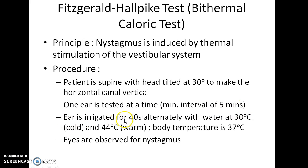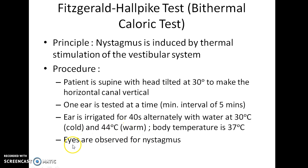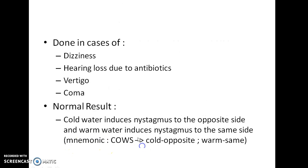The ear is irrigated for 40 seconds alternately with water at 30 degrees Celsius, which is cold water, and 44 degrees Celsius, which is warm water. Remember that body temperature is 37 degrees Celsius, so the cold water is body temperature minus 7 degrees Celsius and the warm water is body temperature plus 7 degrees Celsius. The eyes are then observed for nystagmus.